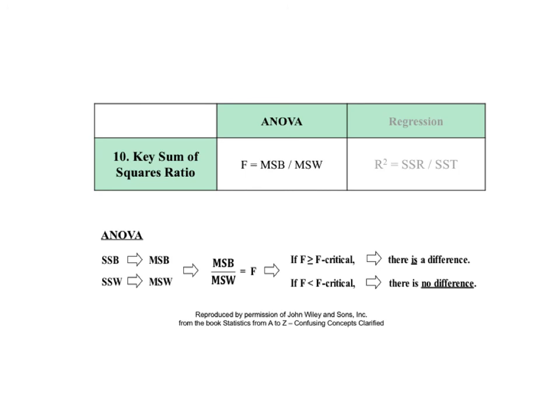For both ANOVA and regression, a ratio of the two sums of squares provides the conclusion for the analysis. For ANOVA, if we divide SSB by its degrees of freedom we get MSB, the mean sum of squares between. Likewise for SSW and MSW. MSB and MSW are similar to the formula for variance, so both are a type of variance. Dividing two variances gives us the test statistic F. If F is greater than or equal to F critical, then there is a statistically significant difference among the groups being tested.